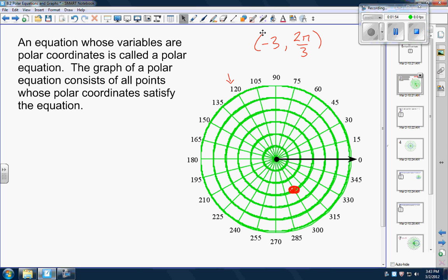Monday I'll give you guys a sheet with a bunch of these on there so you don't have to worry about trying to graph them in your notebooks. Okay, an equation whose variables are polar coordinates is called a polar equation. The graph of a polar equation consists of all points whose polar coordinates satisfy the equation.